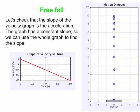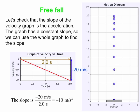We're going to check to make sure the slope of the velocity graph equals the acceleration. This graph has a constant slope, so we'll use the entire graph to find it — rise over run. We dropped minus 20 meters per second over a two-second period, so the slope is minus 20 meters per second divided by 2 seconds, which equals minus 10 meters per second per second, or meters per second squared. And that is indeed the value of our acceleration — it works.